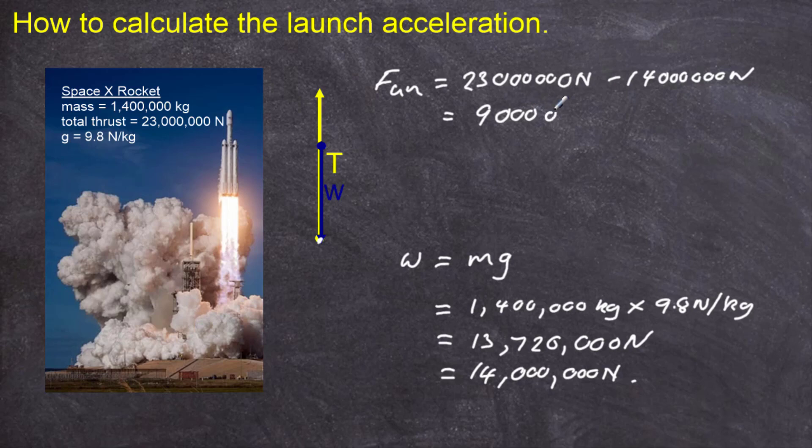And we're going to get an answer of 9,000,000 newtons. So the unbalanced force acting on that rocket, or the net force vertically acting on that rocket, is 9,000,000 newtons. And it's going to be in an upward direction, which means the rocket is going to accelerate upwards.